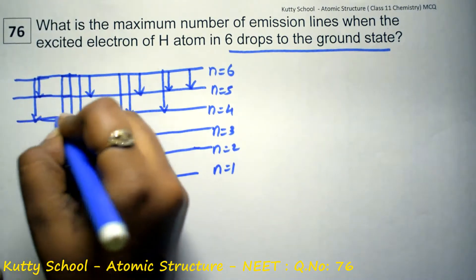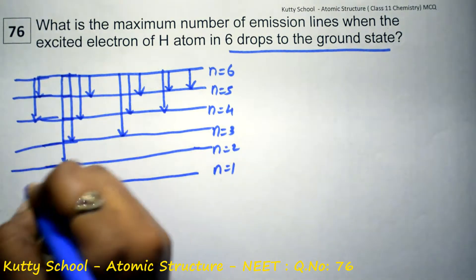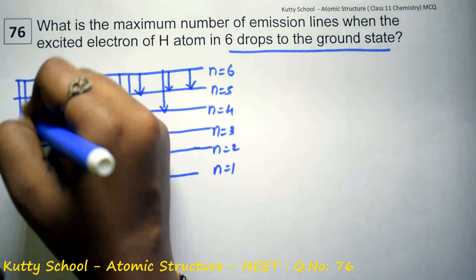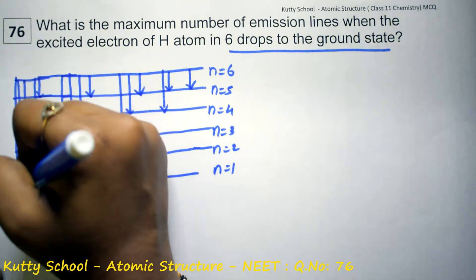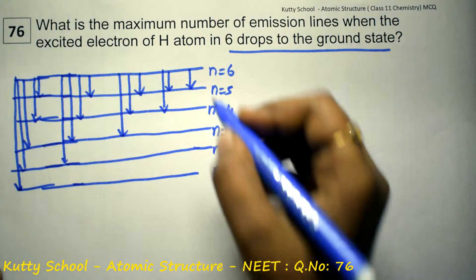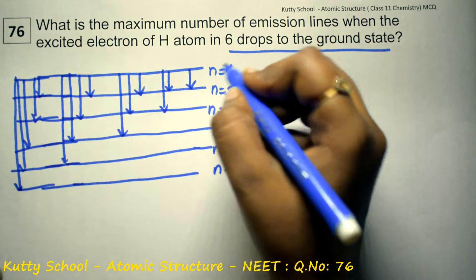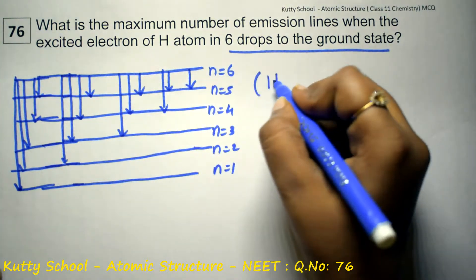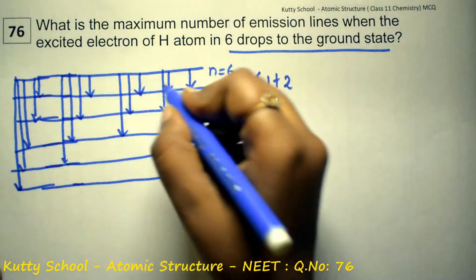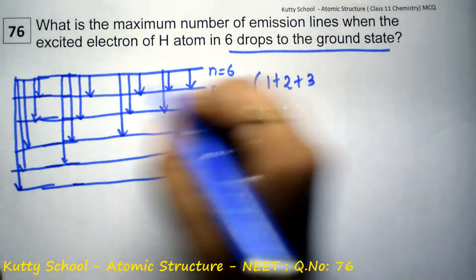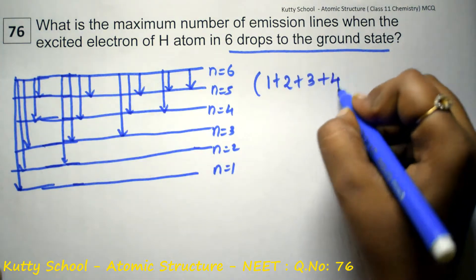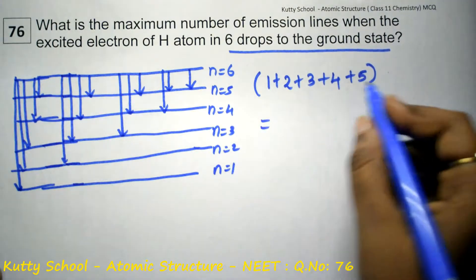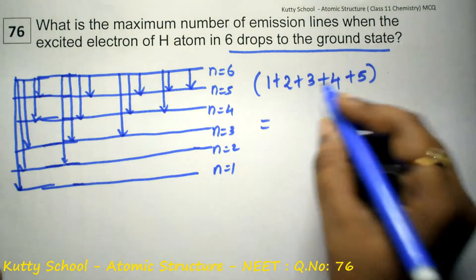Expanding this further — next energy level, approaching the last ground state n=1. In the transition, first is 1, next is 2 — so plus 2 — next is 3 — plus 3 — next is 4 — plus 4 — next is 5.